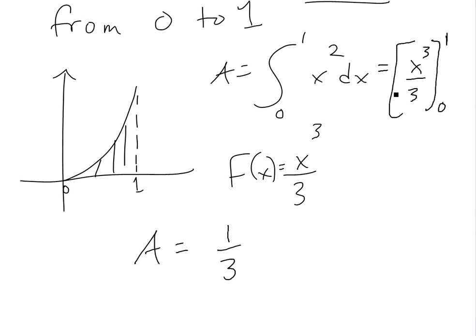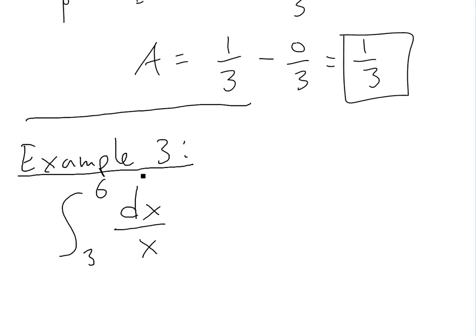We plug that in: 1 cubed is 1, so 1 over 3 minus 0 over 3 equals just 1 over 3. That's the area.